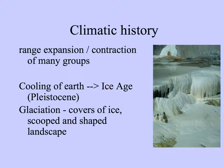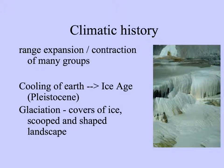The continents moving was one important factor, but also changing climate over time can explain the expansion and contraction of the ranges of many groups. During the Pleistocene, the Earth cooled into a phase called the Ice Age. At this point in time, glaciers covered much of the surface of the earth, scooping and shaping the landscape.